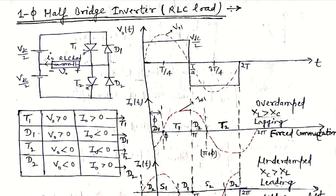If DC excitation is applied to an R, L, C load and we write the KVL equation and take the Laplace transform, we see that it is a second-order equation with an S² term. If we take the inverse Laplace transform, the transient current waveform has a sinusoidal nature because it is an RLC load case. So for an RLC load with DC excitation applied, the output current has a sinusoidal nature.